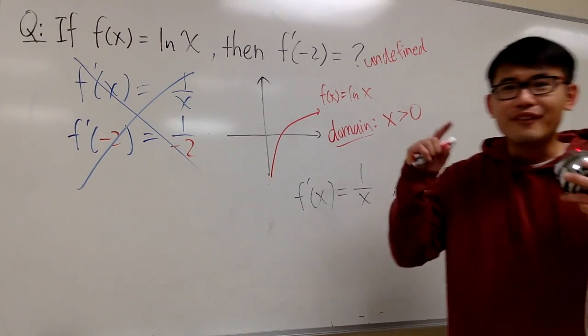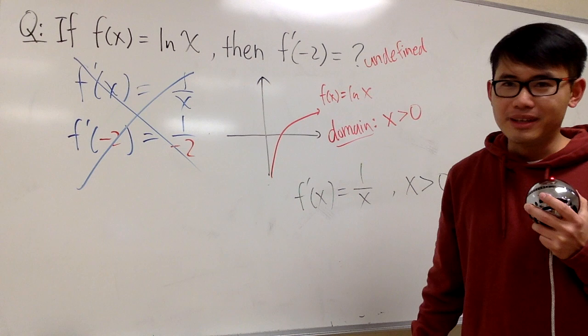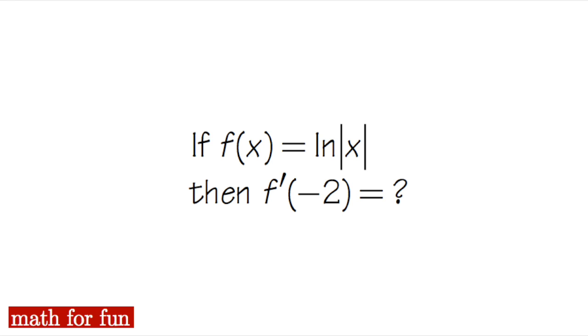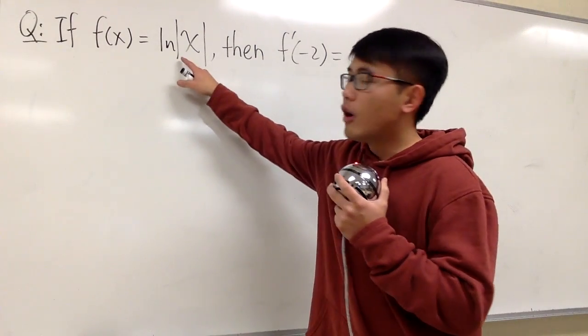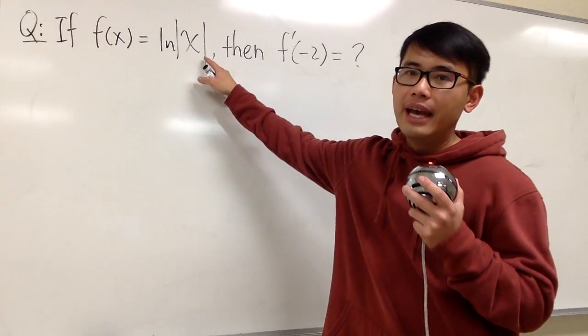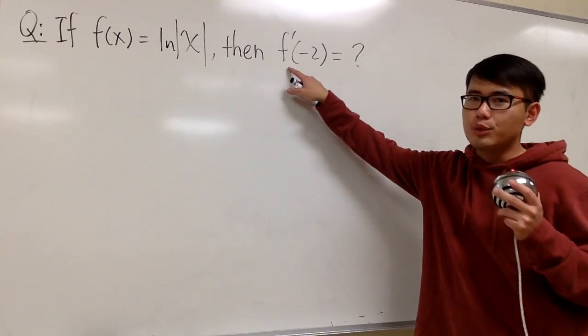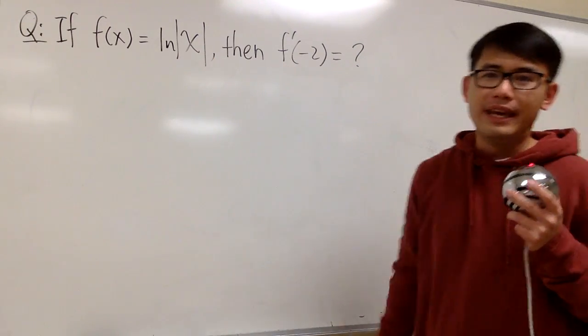Or you can also say domain issue. And now, let's take a look at another situation if that will make a difference. So, right now, I just changed the question. This time, the function is ln of absolute value of x. And we are still going to find out the derivative when x is equal to negative 2.